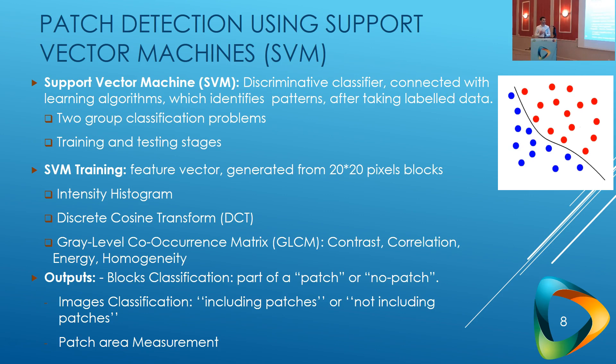SVM is mainly divided into training and testing stages. In our case, the SVM is trained by feature vectors generated from 20 by 20 pixel blocks, which contain information about the intensity histogram and two texture descriptors. Our output is block classification, image classification, and patch area measurement. Every block in the frame is classified as belonging to a patch or not, and then image classification determines whether the image includes any part of a patch.